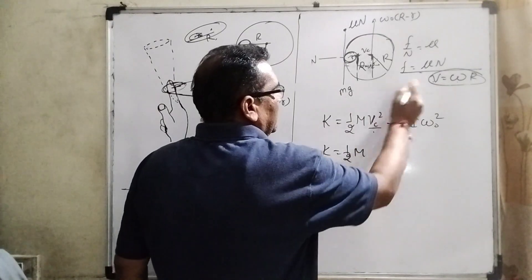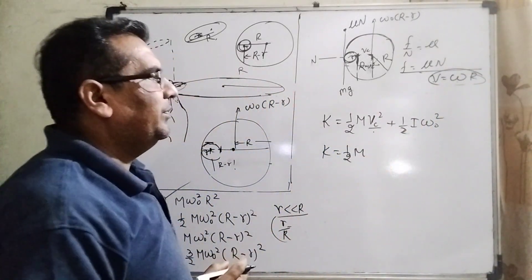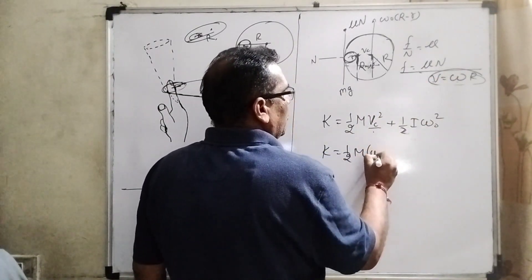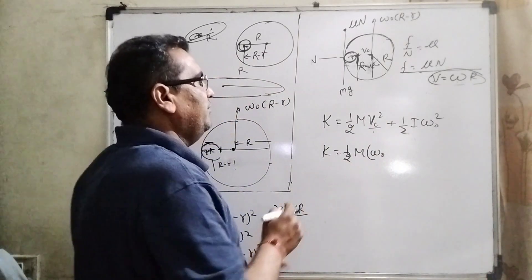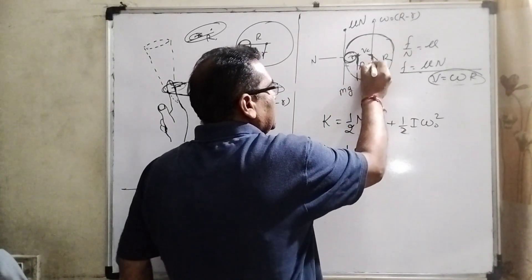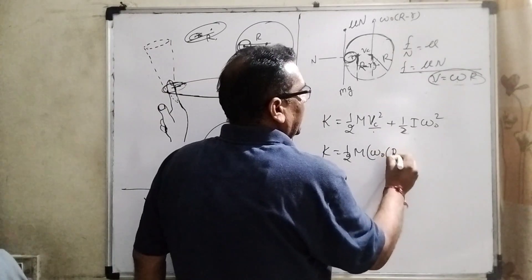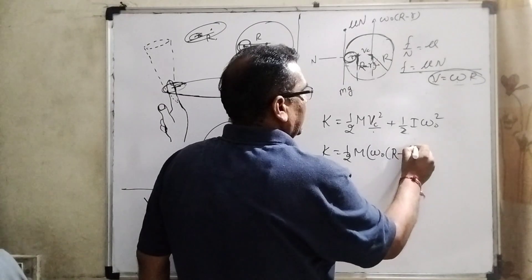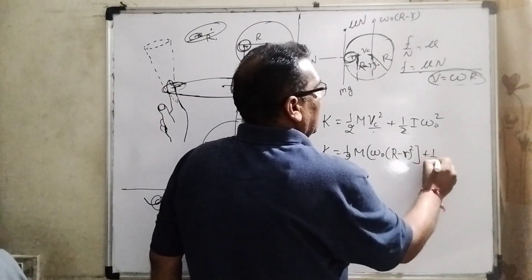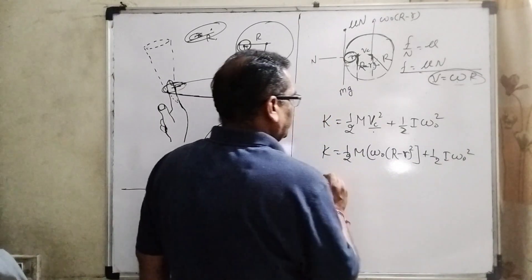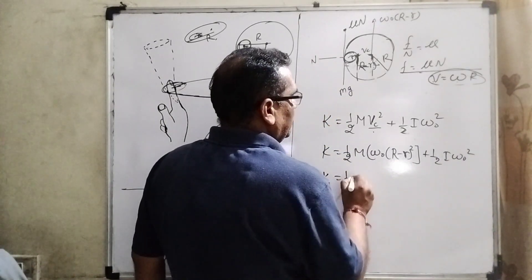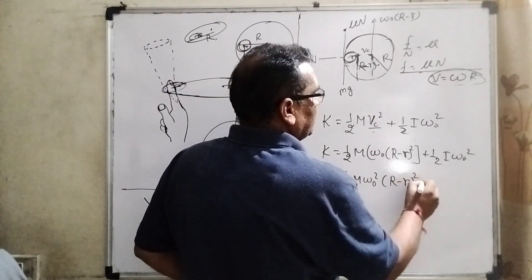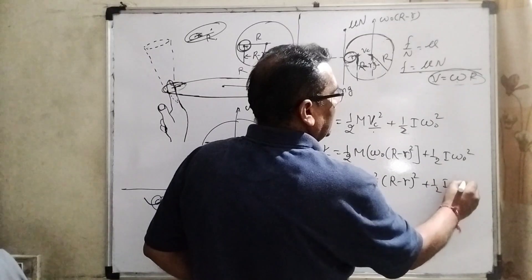We substitute the value of v_cm using the relation v = ωr. Here we use ω₀ and the radius (R − r), so v_cm = ω₀(R − r). Substituting: KE = ½Mω₀²(R − r)² + ½Iω₀².